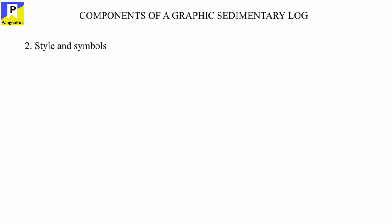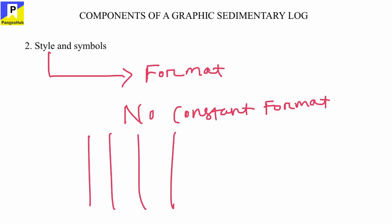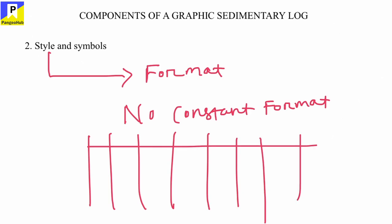The second component of a graphic sedimentary log is style and symbol. Style means the format of the graphic sedimentary log. There is no fixed constant format for a sedimentary graphic log — we can use multiple vertical columns according to the aim of the study. There is no limited number of vertical columns in a graphic log; we can rearrange it according to our requirements.